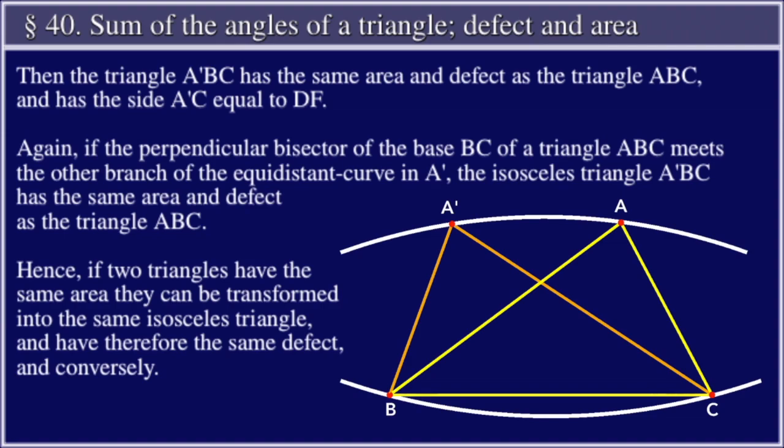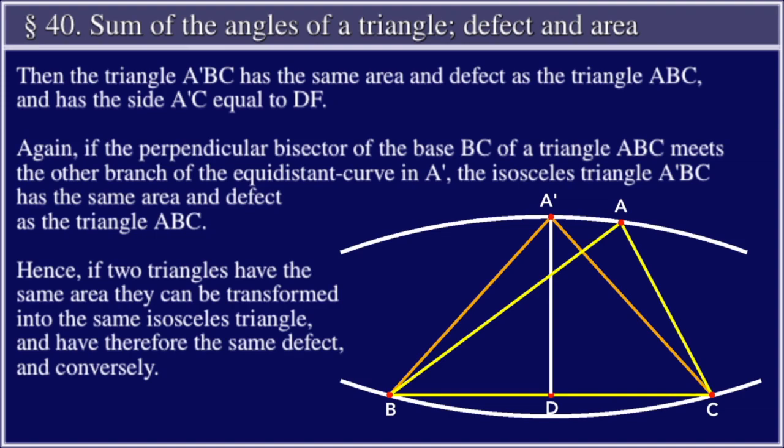Again, if the perpendicular bisector of the base BC of a triangle ABC meets the other branch of the equidistant curve in A', the isosceles triangle A'BC has the same area and defect as the triangle ABC. Hence if two triangles have the same area, they can be transformed into the same isosceles triangle and have therefore the same defect, and conversely.